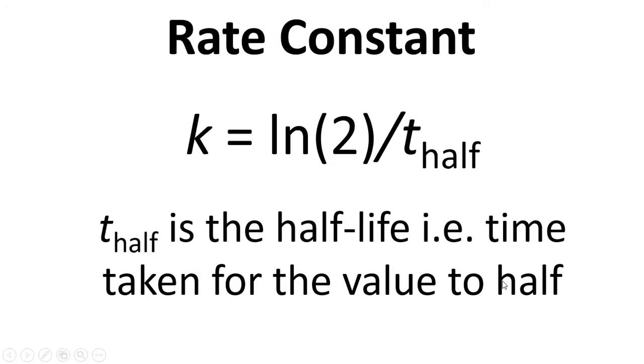To work out the rate constant we have ln(2) divided by t half. t half is the half-life, i.e., the time taken for the value to half. If we have radioactive decay and it takes 8 days for the radioactivity to halve from a particular source, then that is the half-life, and we can use this formula to work out the rate constant.